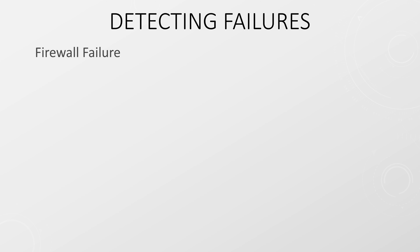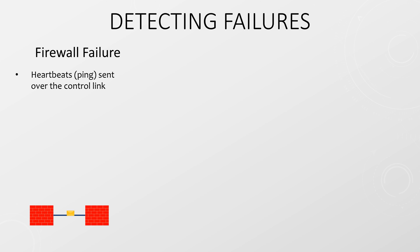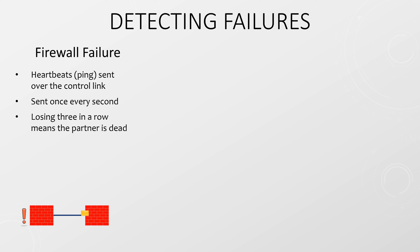During regular operations, the firewall pairs send each other regular heartbeat messages across the control link. This is just a simple ICMP ping. By default, these are sent out once per second, and if three in a row do not arrive, the partner is assumed to be lost. We can change the heartbeat timer using timer profiles, which we'll see briefly in a moment. The recommended profile is the default, but there is also aggressive, or we can create our own.